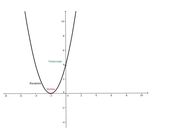It has one vertex. You're not going to have two different vertices. You're just going to have one vertex. And we have, again, a y-intercept.